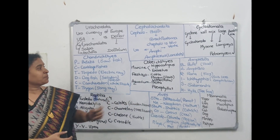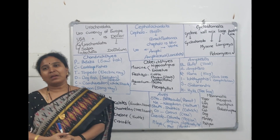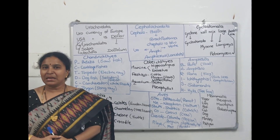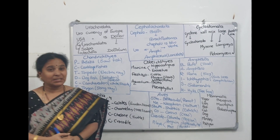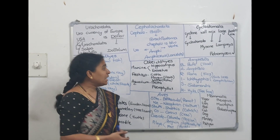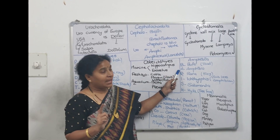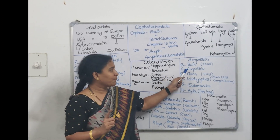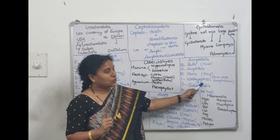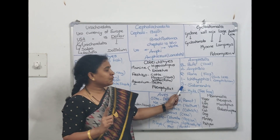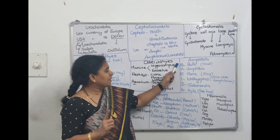Now coming to Amphibians. Amphibians live in water and breathe in the rainy season, so 'Barish' is the code for Amphibians. B-A-R-I-S-H: B for Bufo, A for Amphibia, R for Rana, I for Ichthyophis, S for Salamandra, H for Hyla.